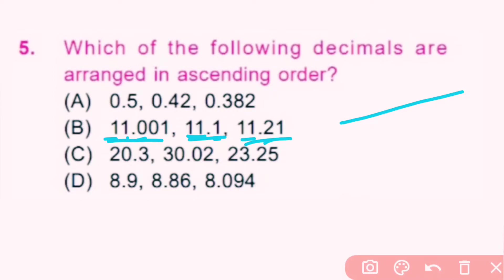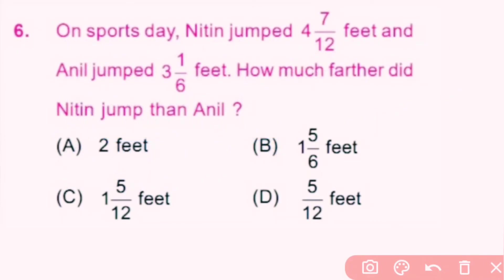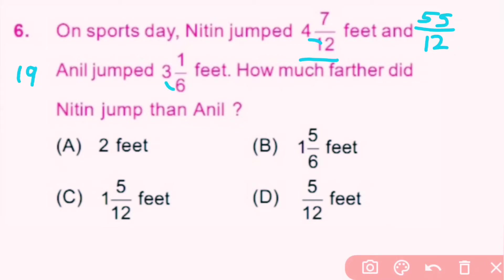Question number 6: On sports day, Natin jumped 4 and 7 by 12 feet and Anil jumped 3 and 1 by 6 feet. How much further did Natin jump than Anil? We convert the mixed fractions: 4 into 12 is 48 plus 7 is 55, so Natin jumped 55 by 12 feet. 3 into 6 is 18 plus 1 is 19, so Anil jumped 19 by 6 feet. We need to subtract.